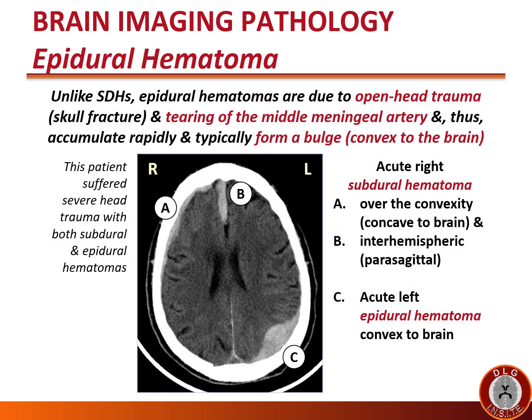Unlike subdural hematomas, epidural hematomas are due to open head trauma with skull fracture and tearing of the middle meningeal artery, and thus accumulate rapidly and typically form a bulge convex to the brain. In this patient who suffered severe head trauma with both subdural and epidural hematomas: label A marks the acute right subdural hematoma over the convexity, concave to the brain; label B marks the acute interhemispheric or parasagittal subdural hematoma; and label C marks the acute left epidural hematoma, convex to the brain.